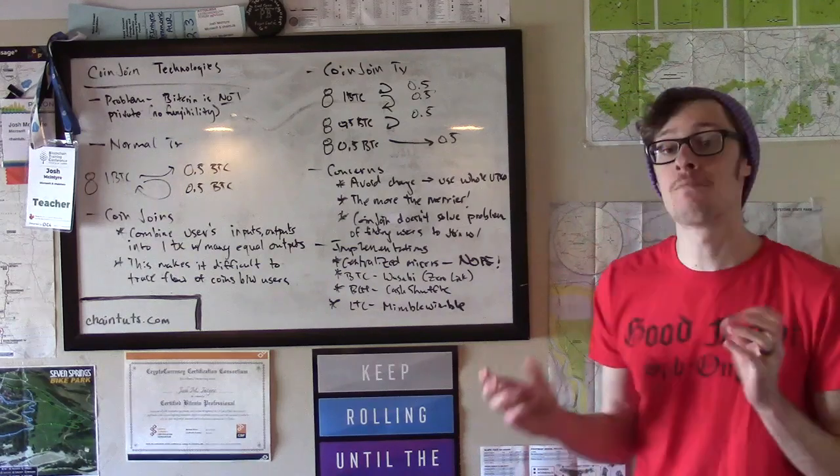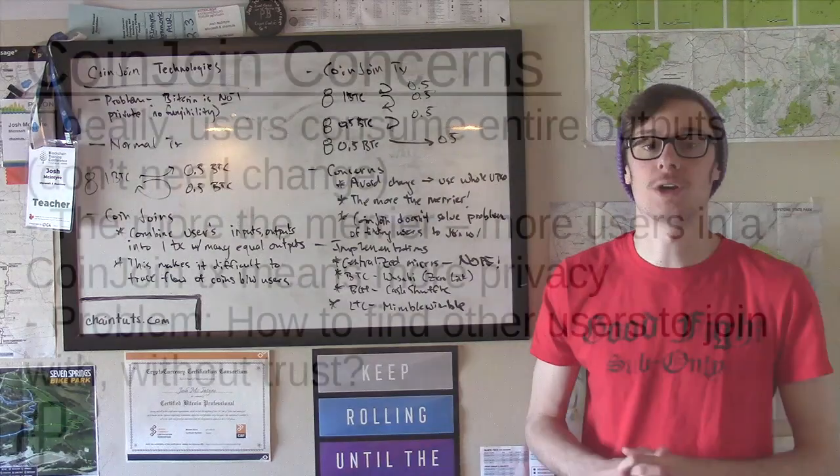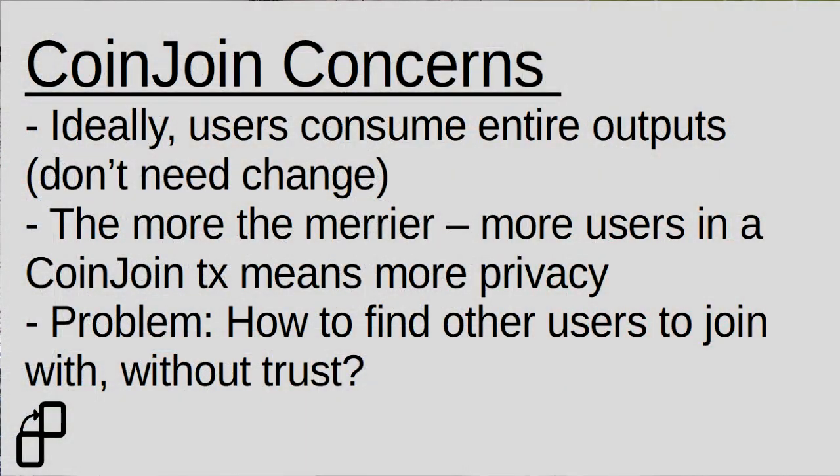Also, the more the merrier. The more people that participate in a CoinJoin transaction, the greater the size of what is called the anonymity set. If you have three users doing a CoinJoin, it's less secure and less privacy preserving than 10 users doing a CoinJoin because it simply obscures the addresses more and makes the chain analysis harder to do.